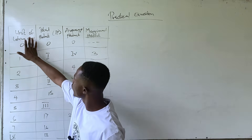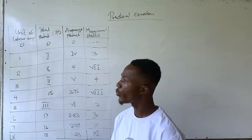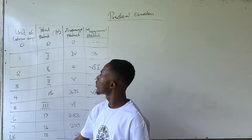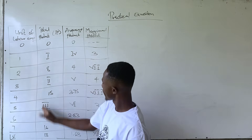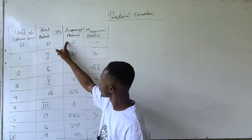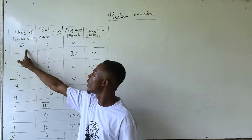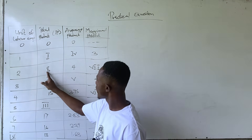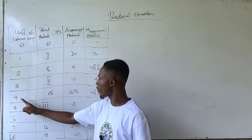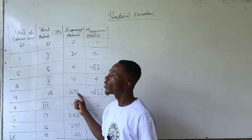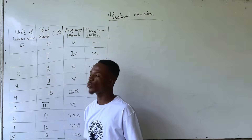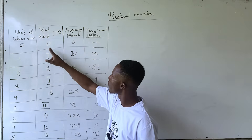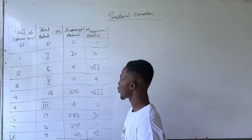We have units of labor employed, total products, average products, and marginal products. Total products is the output. Average product is total product divided by output (quantity). For example, 8 over 2 gives 4, and 15 over 4 gives 3.75. For marginal product, it is always change in total product over change in quantity.